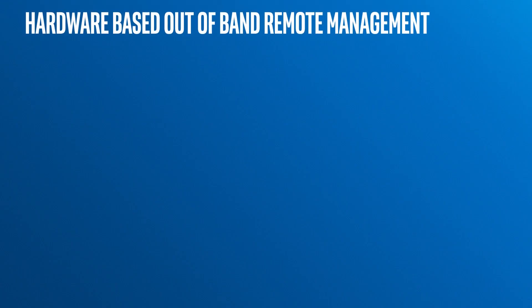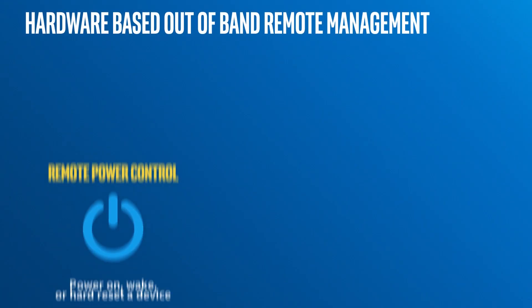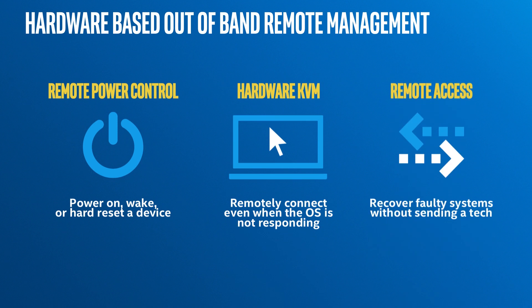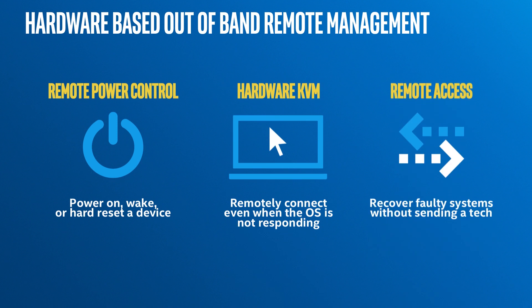In addition, if a machine is turned off, you can wake it up, push out an update or any kind of patch for a security concern, and turn off the machine gracefully or do a hard shutdown, similar to if you yank the power cord from the machine.